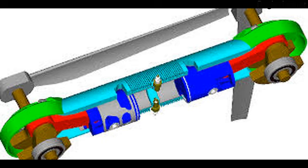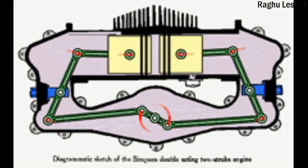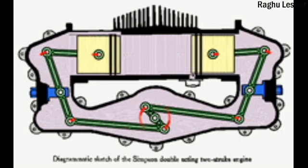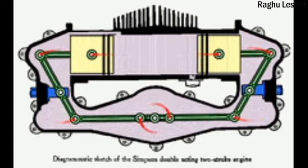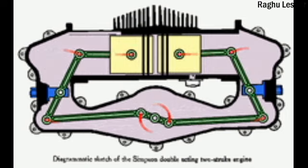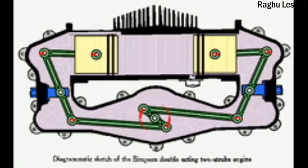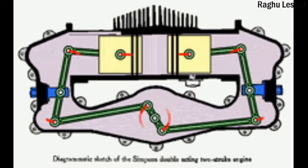Later engines, such as the Junkers Jumo 205 diesel aircraft engine and today's Achates Power engine, use two crankshafts, one at either end of a single bank of cylinders. There are efforts to reintroduce the opposed piston diesel aircraft engine with twin-geared crankshafts for general aviation applications, by both DAR and Powerplant Developments in the UK.